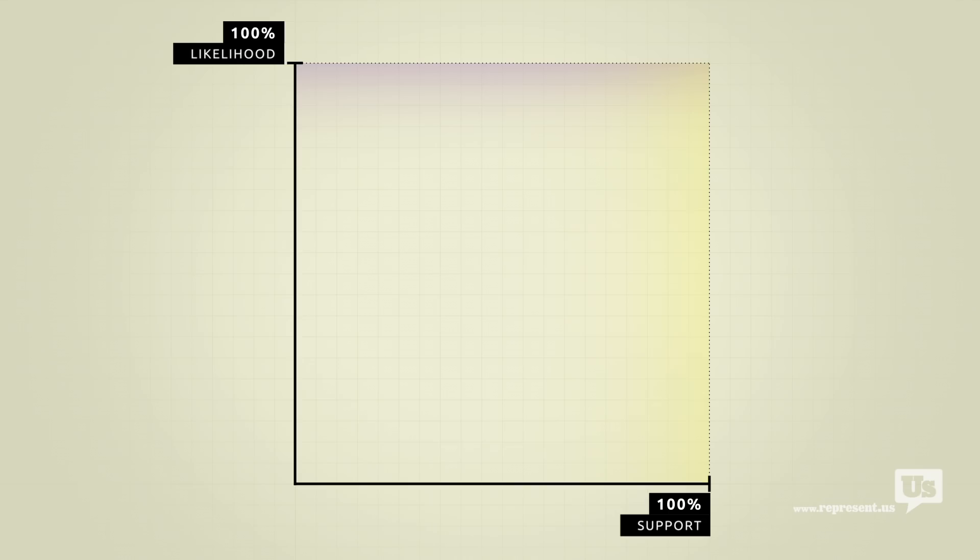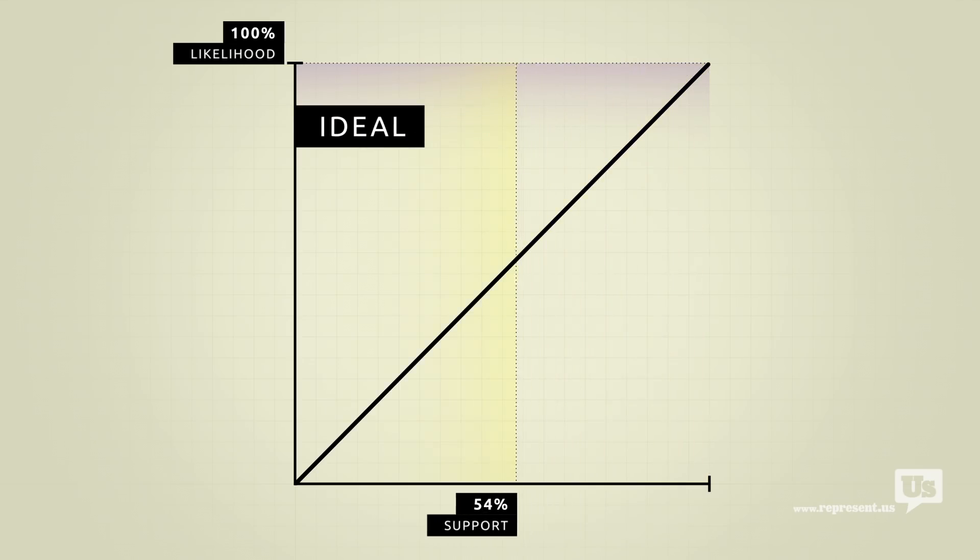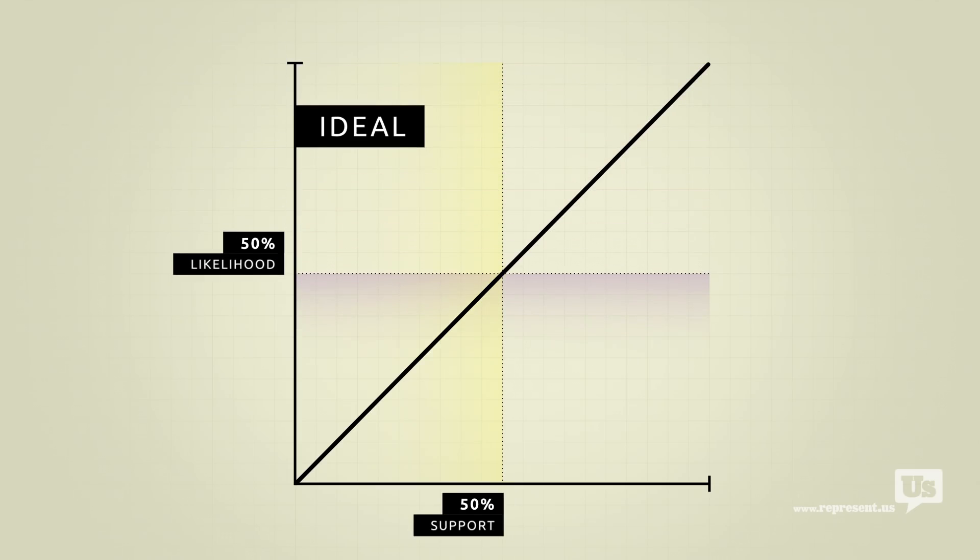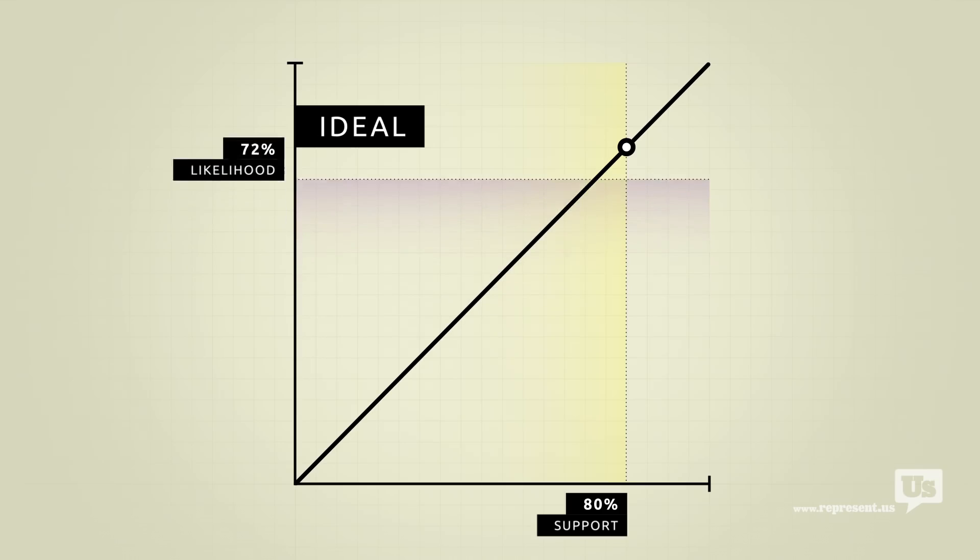On this graph, an ideal republic would look like this. If 50% of the public supports an idea, there's a 50% chance of it becoming law. If 80% of us support something, there's an 80% chance. You get the idea.